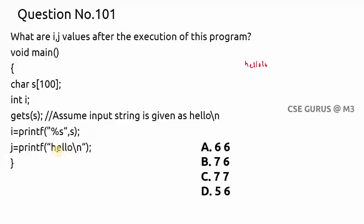h, e, l, l, o — that's five symbols. And \n in C counts as one symbol, because \n together has one meaning: it is the newline character. So \n is not two symbols but one. Therefore h-e-l-l-o plus \n gives five plus one equals six. So j value will be six.